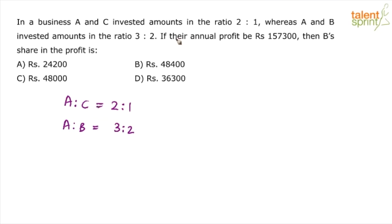Now, if their annual profit is 1,57,300, then what is B's share in the profit? First and foremost, you have to club the two ratios. We have to find out what is A is to B is to C.